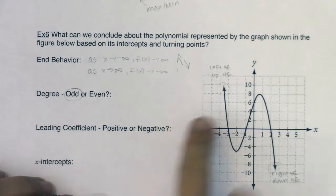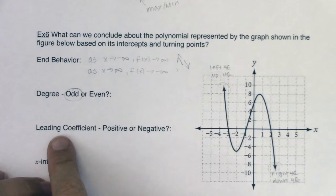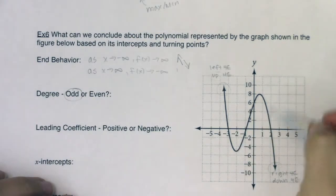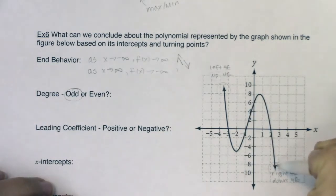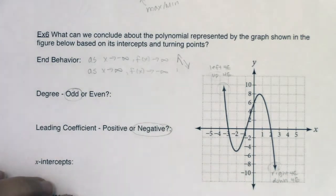Now if I was again going to try and get that function's equation, would that lead coefficient be positive or negative? Well, if I'm taking a look at this, I see that the left end is up and the right end is down. And specifically when your right end is down, if your right end is ever down, and this is true for odd or even, but if your right end is down, then you have a negative lead coefficient.